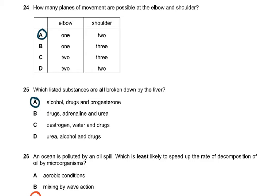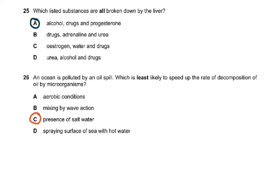Which listed substances are all broken down by the liver? Alcohol, drugs, and progesterone. Why progesterone? Progesterone is a hormone. Why is B wrong? Because urea is not broken down by the liver, it is formed in the liver.